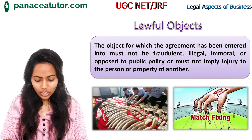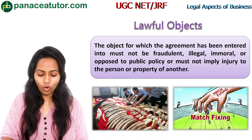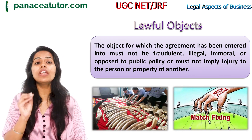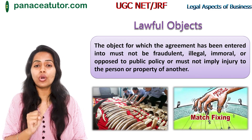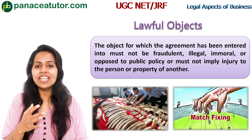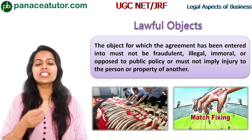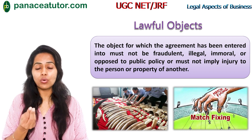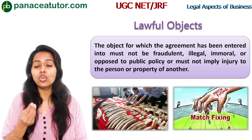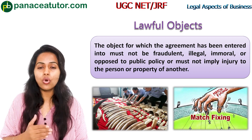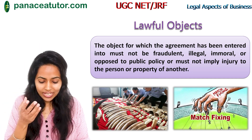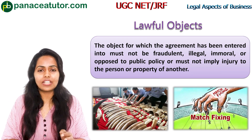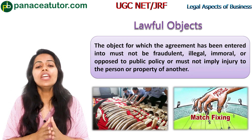The next essential element is lawful object. The object for which the agreement is entered into must be lawful — it should not be fraudulent, illegal, or immoral. For example, smuggling or match-fixing would be unlawful objects. Any contract whose object is against the law — illegal or immoral — is not a valid contract. The contract must have a lawful purpose.